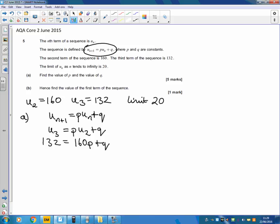The bit that some students found difficult is using the limit. The limit of the sequence is when the next term equals the previous term. So the limit is when 20 equals 20p plus q, because we replace u_{n+1} and u_n with 20.